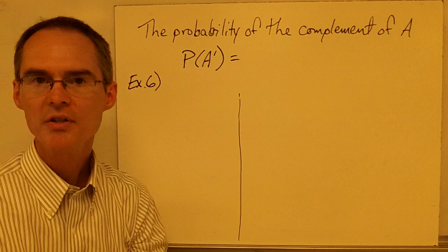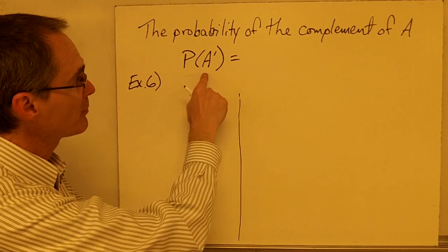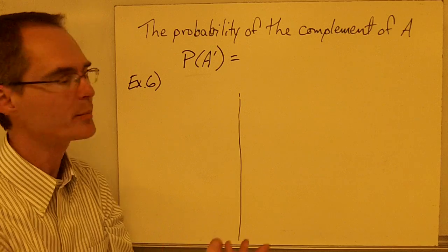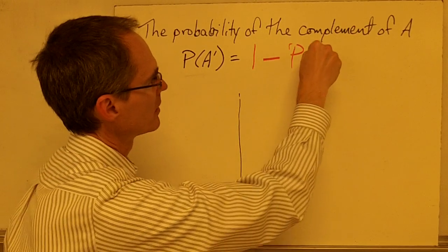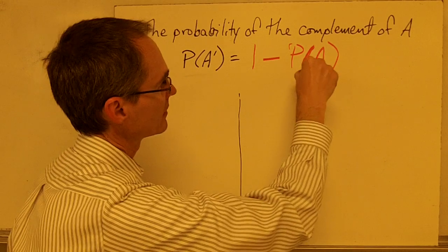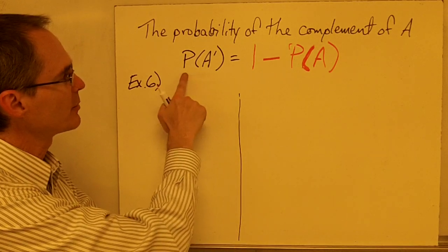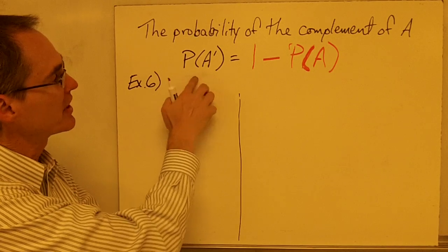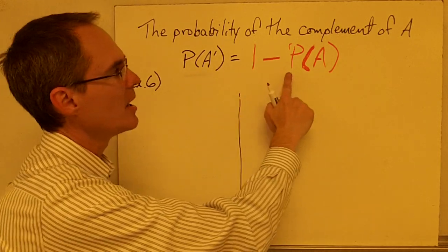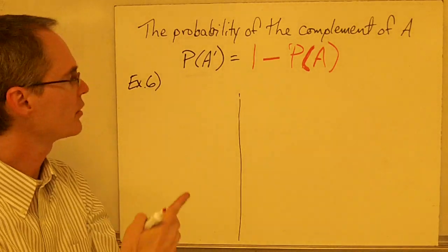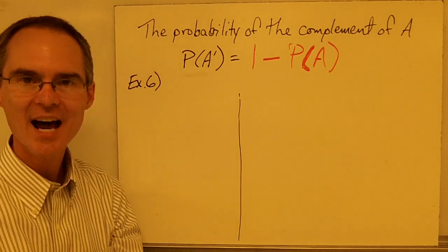The probability of the complement of event A is written as the probability of A prime. There's a formula for this: the probability of the complement of A is just 1 minus the probability of event A. This formula is often very handy, because sometimes the probability of a particular event is difficult to calculate, but the probability of its complement is very easy to calculate.